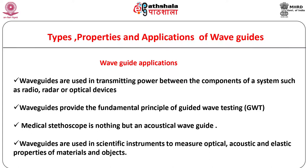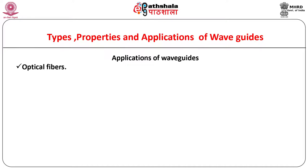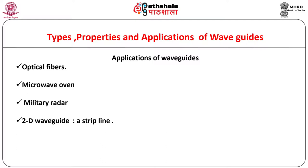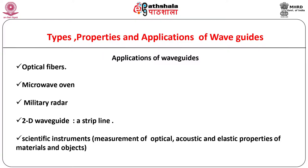Everyone is aware of the term sonography, which means medical ultrasonography. Optical fibers are used to transmit electromagnetic signals including light over considerably long distances with high speed. Microwave oven does not need any introduction — it is a waveguide in which power generated by the magnetron is transferred to the cooking chamber. In a military radar, the waveguide transfers radio frequency energy to and from the antenna. A waveguide in two dimensions called a strip line can be developed on a printed circuit board for transmitting microwave signals.